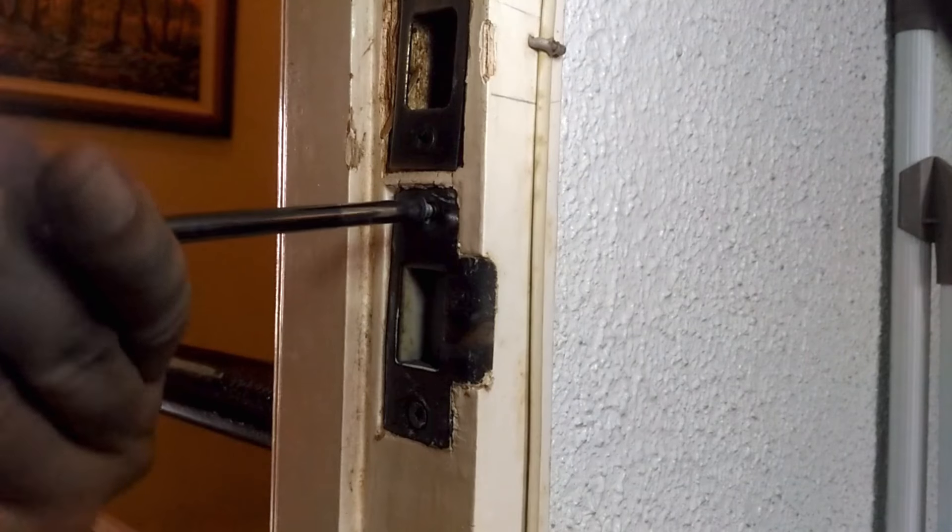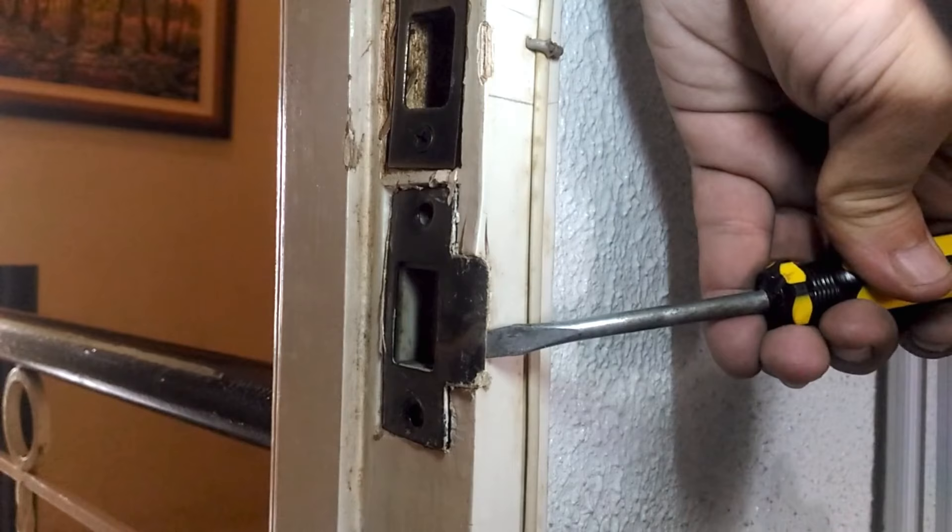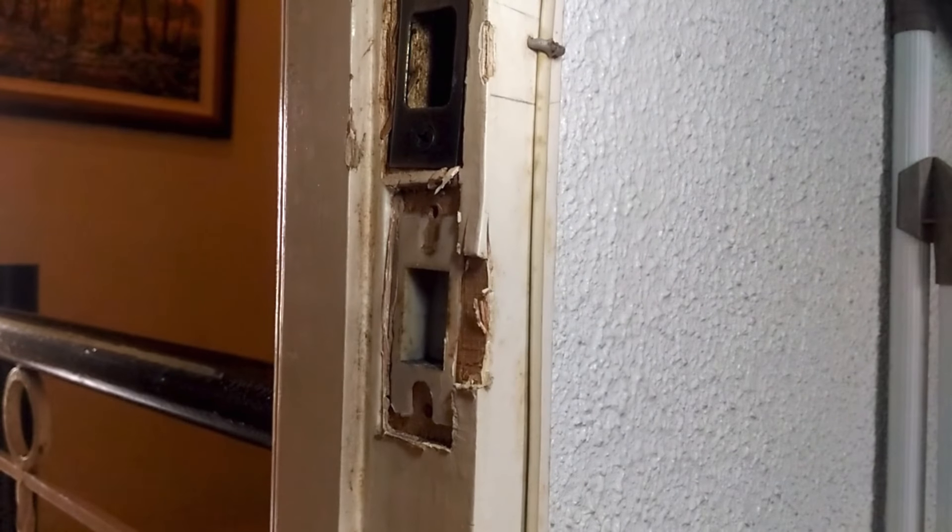Moving on to the door jamb, let's unscrew the strike plate. Using the same technique, pry out the plate and the strike box with the flathead and hammer combo.